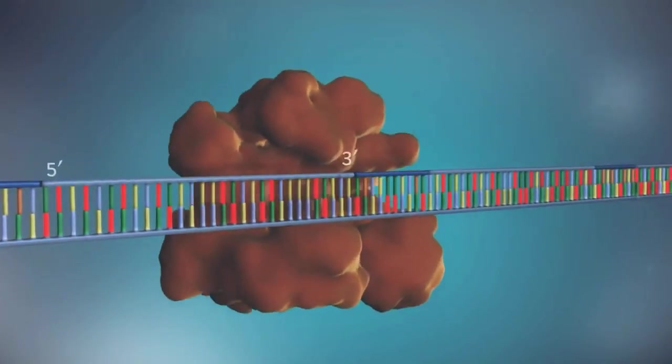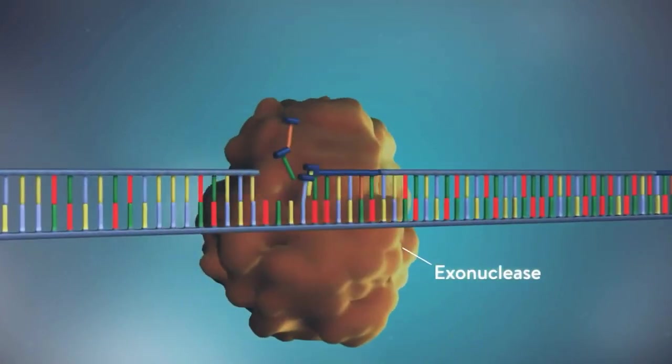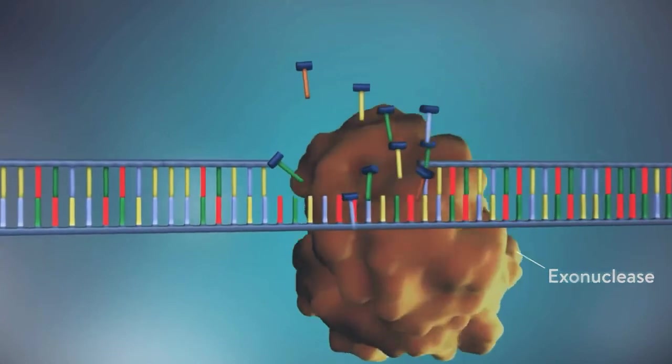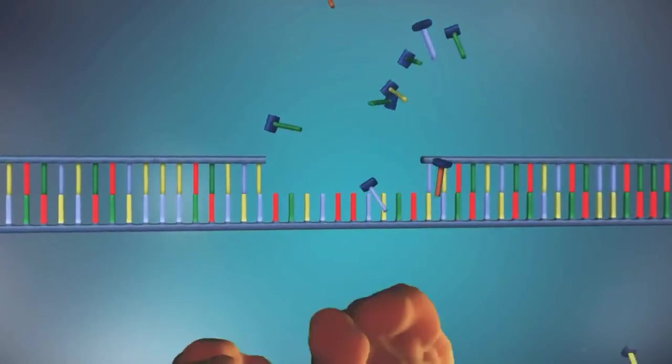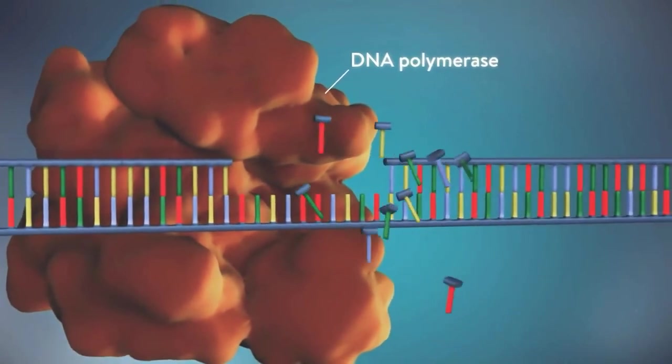Once the new DNA has been made, the enzyme exonuclease removes all the RNA primers from both strands of DNA. Another DNA polymerase enzyme then fills in the gaps that are left behind with DNA.